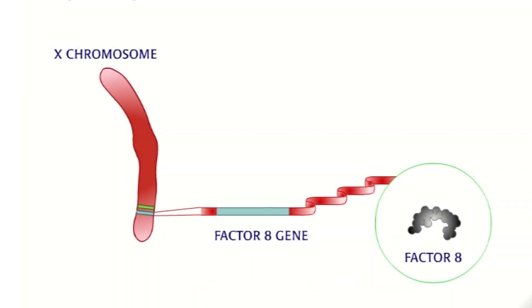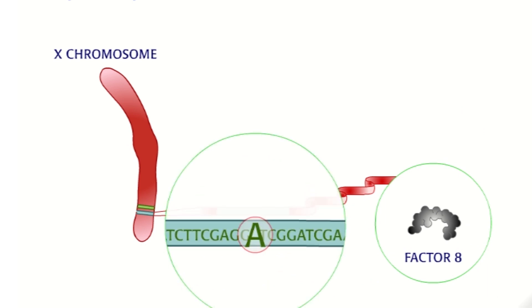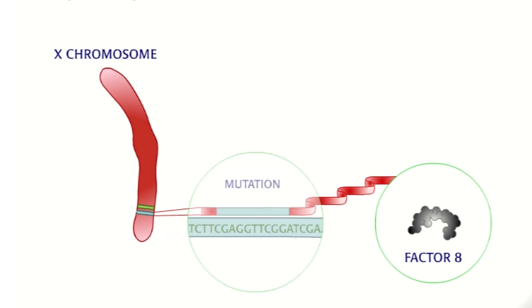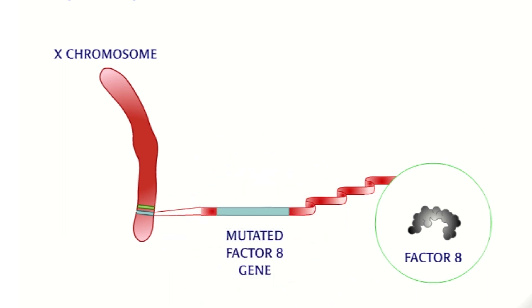People with mild hemophilia A have mutated factor 8 proteins. This is due to a small mutation in their factor 8 gene, located on the X chromosome. The gene's code carries the instructions for building the protein, so a minor change in the instructions causes a minor change in the shape of the protein.